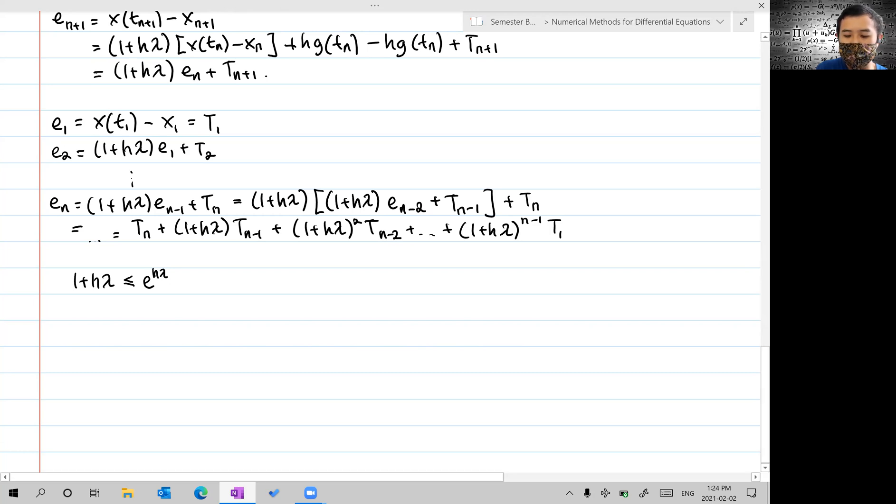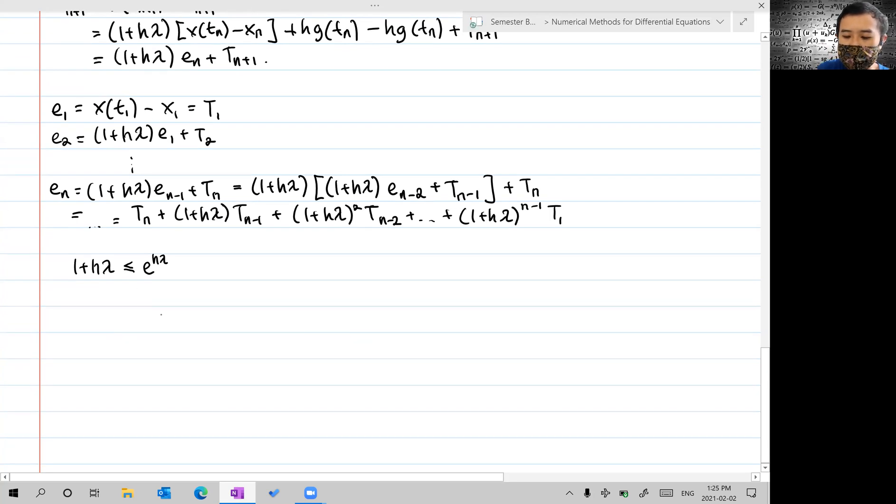(1 + hλ) is smaller than or equal to e^{hλ}. Bear in mind that we need hλ to be positive here. If this is the case, then we arrive at τ_n + e^{hλ}τ_{n-1} + e^{2hλ}τ_{n-2} plus until e^{(n-1)hλ}τ_1.